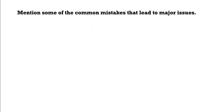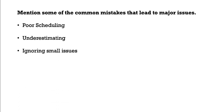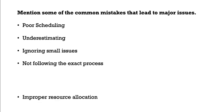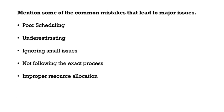Mention some common mistakes that lead to major issues — this is frequently asked in interviews about issues you have faced that led to major problems, so it could be directed at an experienced candidate. Common mistakes include: poor scheduling, underestimating, ignoring small issues, not following the exact process, and improper resource allocation. For example, if a task requires a full day but is estimated as one or two hours, that is underestimation and should be avoided.